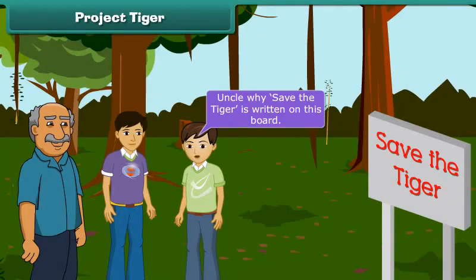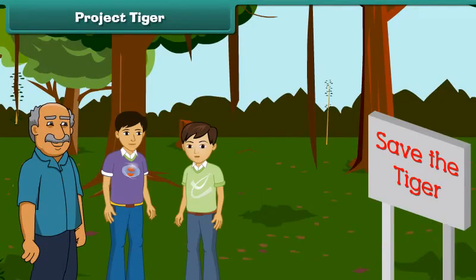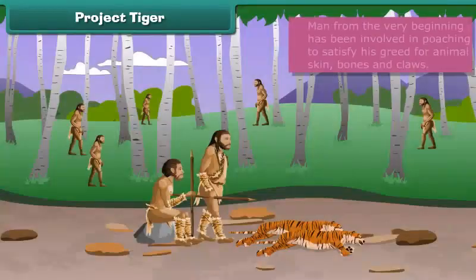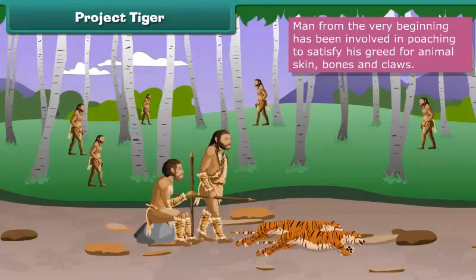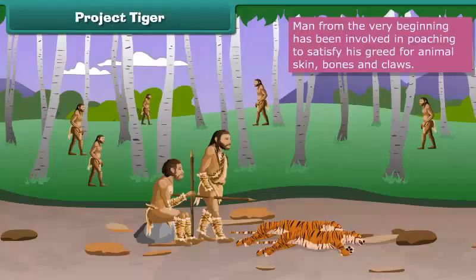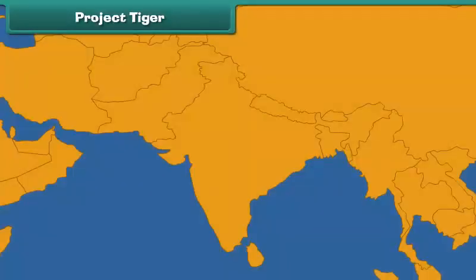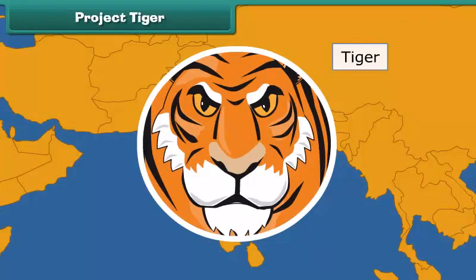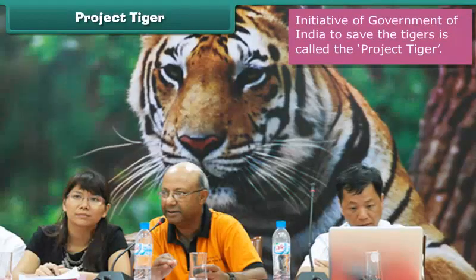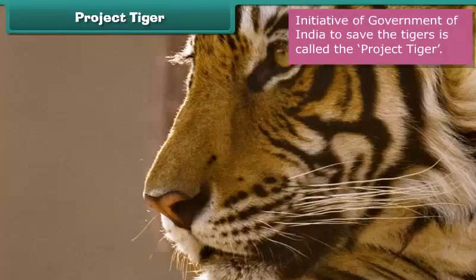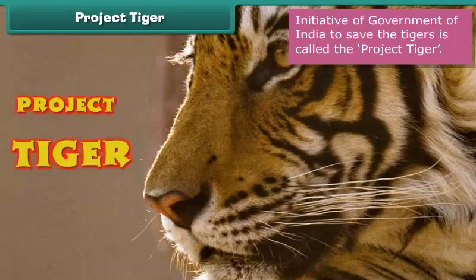Protecting forests. We need to protect forests. The first and foremost step is to stop cutting trees in large numbers to develop agricultural lands or for living. It is also necessary to stop poaching of wildlife animals for their skins, horns or teeth. Government laws against the killing of animals should be strictly implemented. The protected forest area is called a wildlife sanctuary.